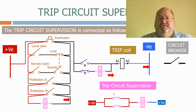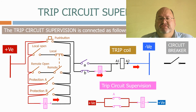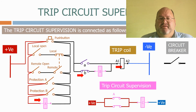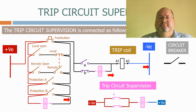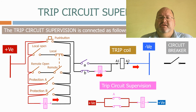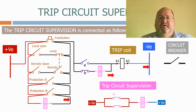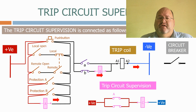Trip circuit supervision is a great way of monitoring the health of the trip circuit and very often provides an indication of problems that have arisen elsewhere in the substation — either when the DC supplies have failed or when someone's left a control link out on a panel in the control room. When a trip circuit supervision alarm is received, the operators in the control room will take immediate action. Dependent on the electrical utility's policy, the network may be reconfigured to take the affected circuit breaker off the network until the issue is rectified, as it can no longer be relied upon to clear any faults that may occur.